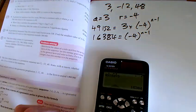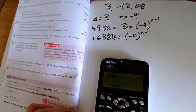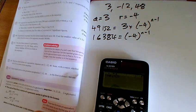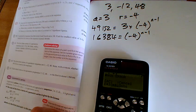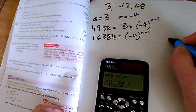And if we now try and do what we did before, log to the base minus 4 of 16,384, the calculator gives an error. So it's not in the sequence.